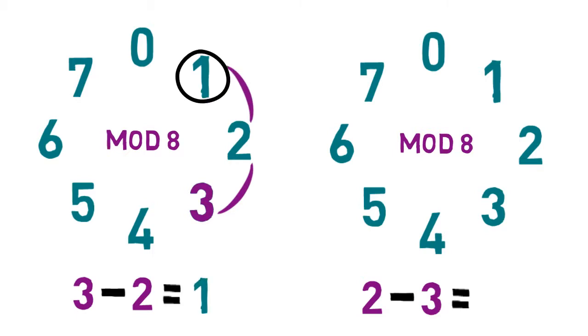But when you subtract a number minus a larger number, the result is surprising. 2 minus 3 equals 7.